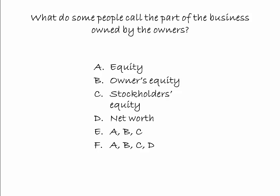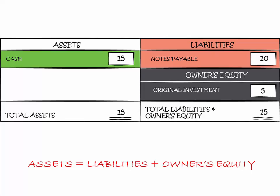What do you think some people call the part of the business owned by the owners? You can pause the lecture to think about what the answer should be. The correct answer is F — people can call the part of the business owned by the owners: equity, owner's equity, stockholders' equity, or net worth. Net worth is the same as assets minus liabilities, or the net assets of the company which belong to the company's owners. This brings us to the accounting equation, which states that assets on the left of the balance sheet equal liabilities plus owner's equity on the right side.